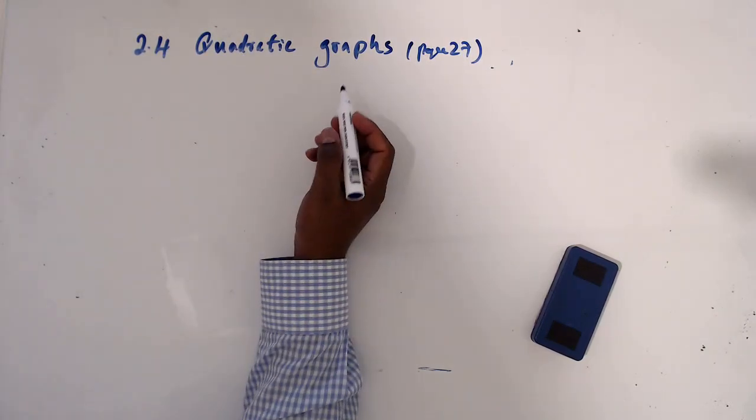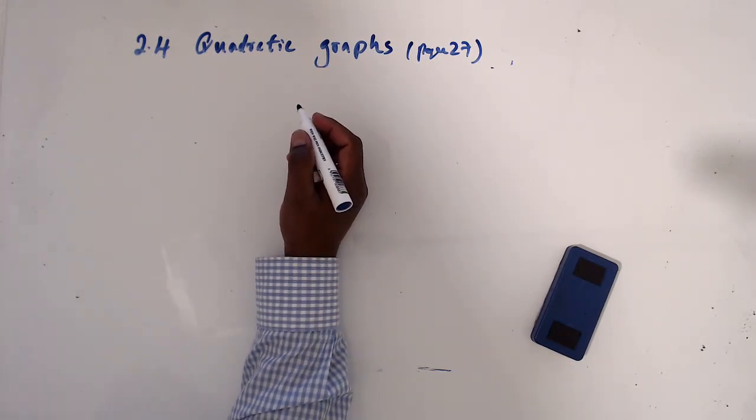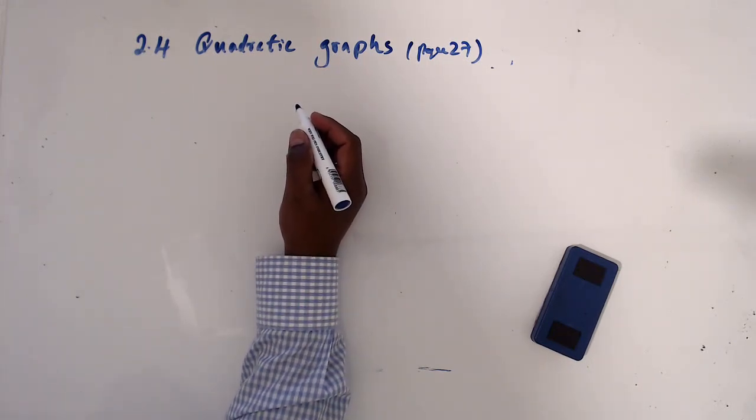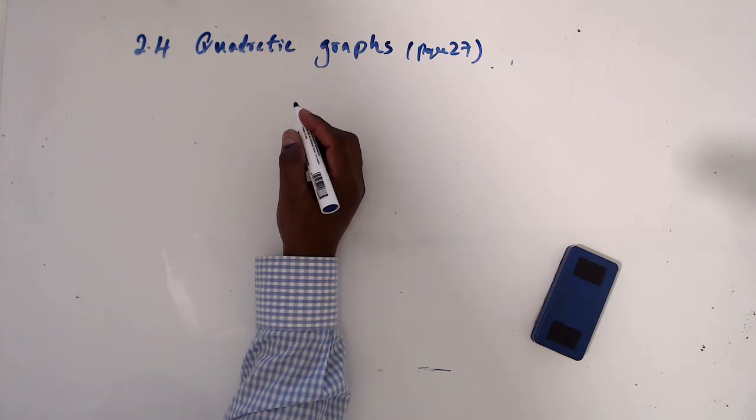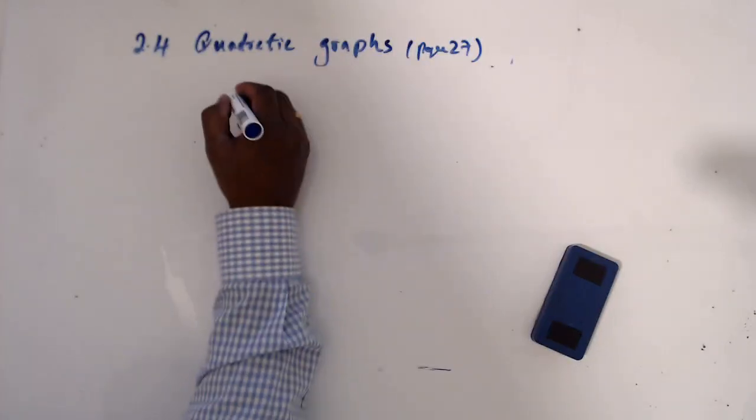2.4 quadratic graph sketching, page 27. So I will start with the example. I can see example 11, actually I'm going with example 11.